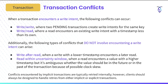There are also conflict types that don't involve encountering a write intent. A write-after-read conflict occurs when a write with a lower timestamp encounters a later read. A read with uncertainty window conflict occurs when a read encounters a value with a higher timestamp, but it's ambiguous whether that value should be in the future or past of the transaction due to possible clock skew. In a distributed system, clocks must be synchronized across nodes, with a maximum allowable clock skew — by default 500 milliseconds, or 250 milliseconds for multi-region clusters — representing this uncertainty window.